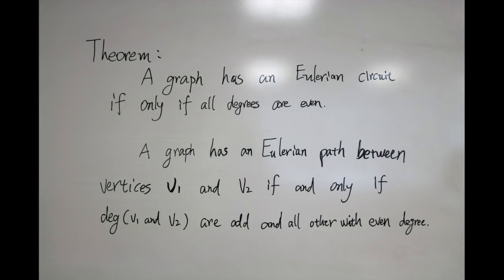Therefore, the Eulerian path requires you to start and end with odd degrees and have all even degree vertices in the middle.